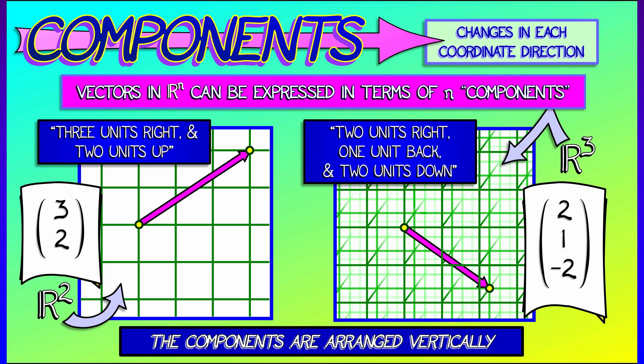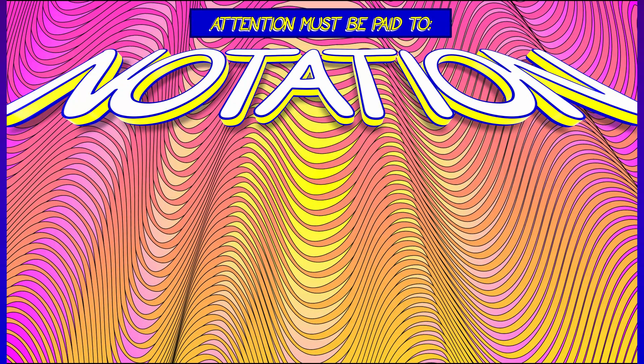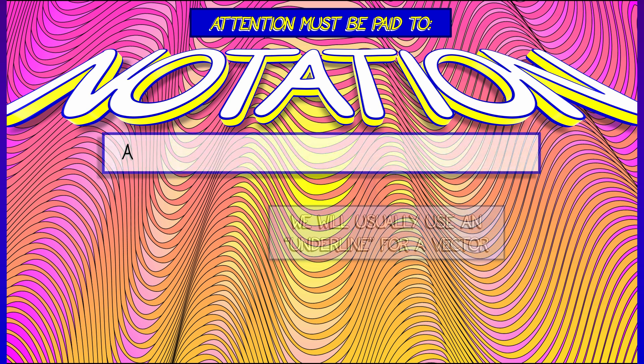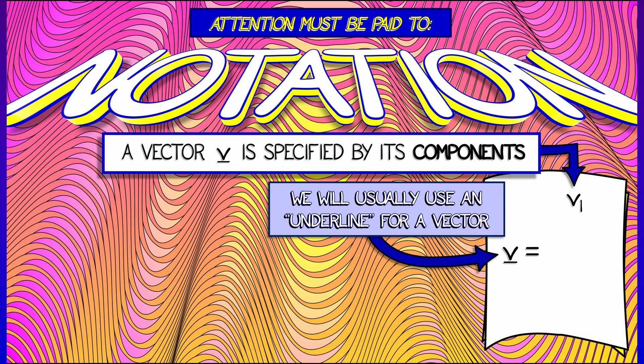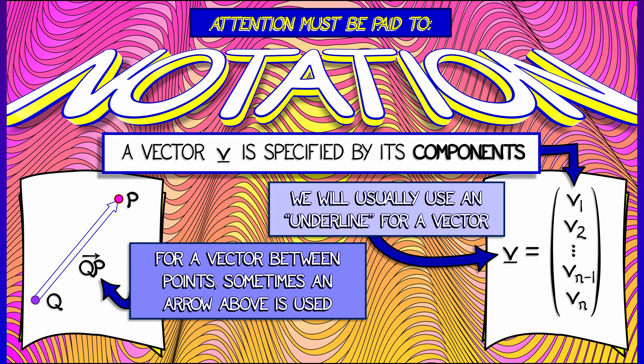They could be any numbers, but it is important to get the notation right and stack those components vertically. A bit more on notation: we're often going to use a letter with an underline to specify a vector, say v, and we'll specify the components using subscripts v1, v2, all the way up through vn for a vector in Rn. Notice that they are stacked vertically with the parentheses around it.